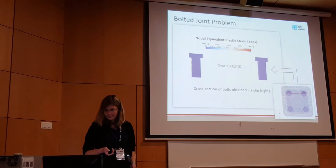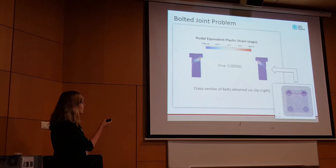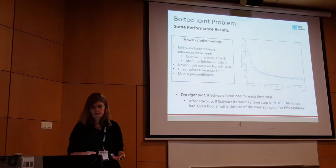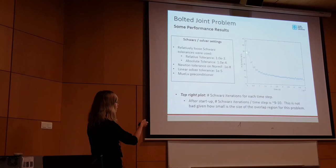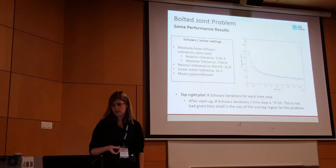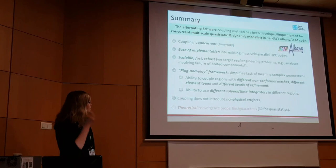We can look at nodal equivalent plastic strain in the bolts — you'd expect these things to ultimately fail. In terms of performance, this plot shows the number of Schwartz iterations as a function of time. You start off with a lot of iterations, but very soon this goes down to about nine or ten Schwartz iterations, which is actually really good given that the overlap region for this problem is incredibly small.